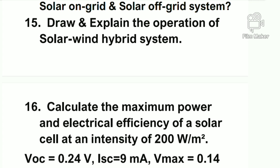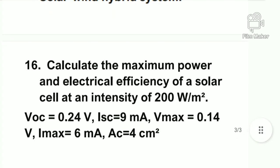Question sixteen: calculate the maximum power and electrical efficiency of a solar cell at an intensity of 20 W per meter square. The given values are: V_OC (open circuit voltage) = 0.24 V, I_SC (short circuit current) = 9 mA, V_max (maximum voltage) = 0.14 V, I_max (maximum current) = 6 mA, and area = 4 cm square. Subscribe to the channel and share it. Thank you.